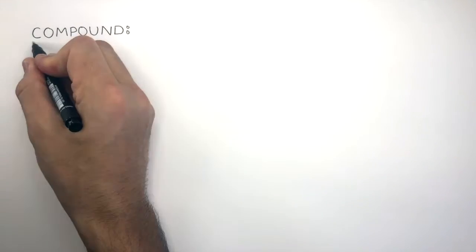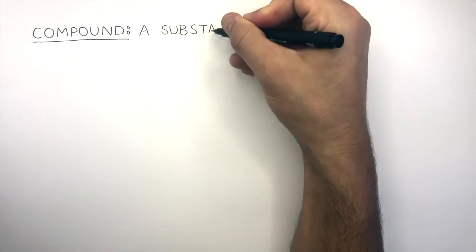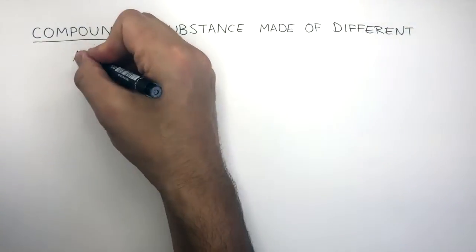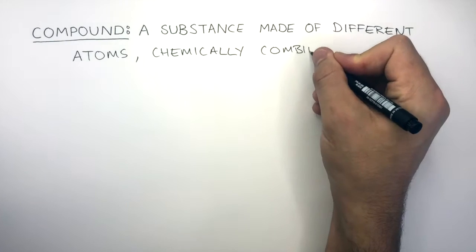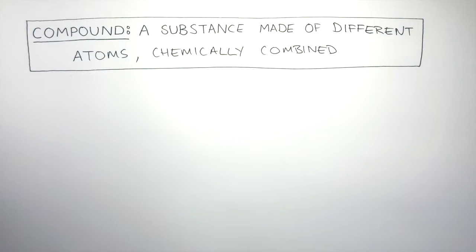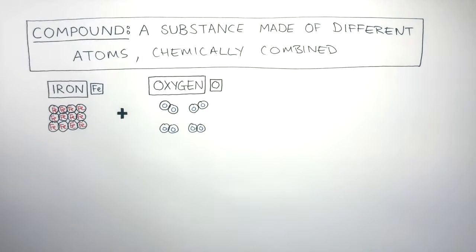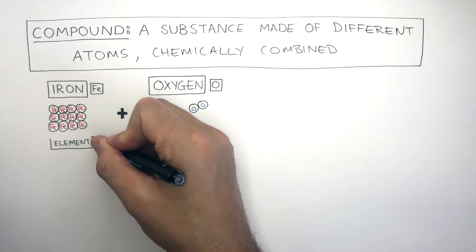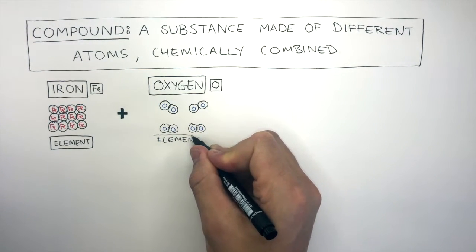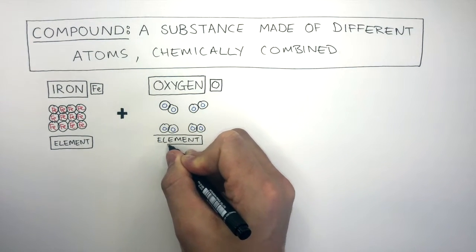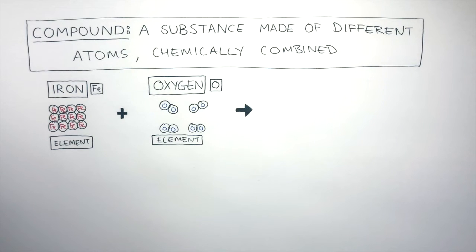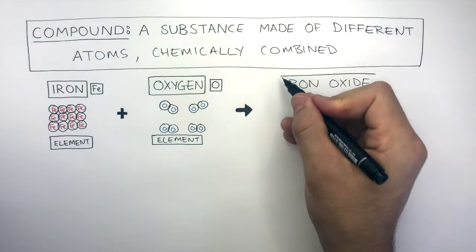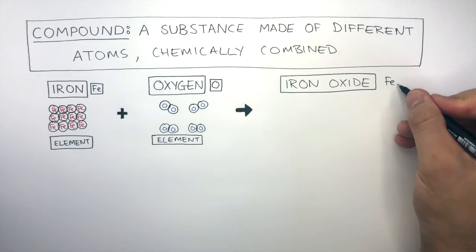The definition for a compound is it's a substance made of different atoms which are chemically combined. To understand what a compound is let's look at how iron reacts with oxygen. Iron is an element and oxygen is also an element as they are both made of the same type of atoms. So when iron and oxygen react they form iron oxides which can have the chemical formula FeO.